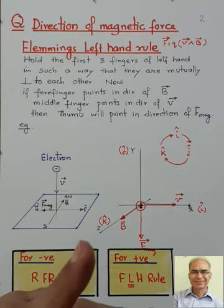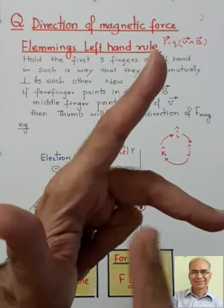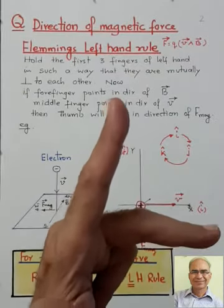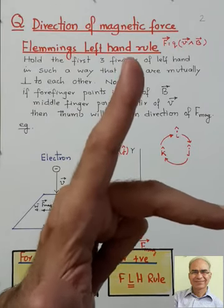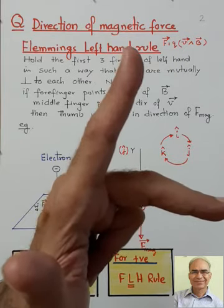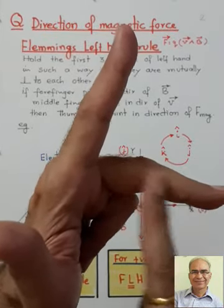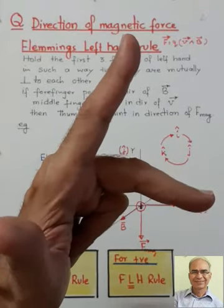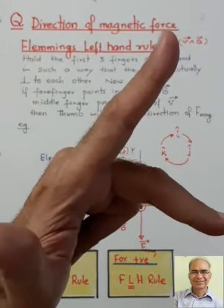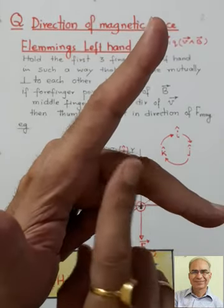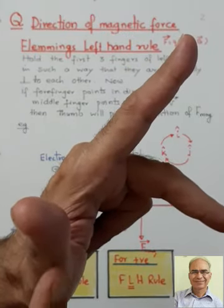What does this rule say? We use our left hand and hold the first three fingers mutually perpendicular to each other. If four fingers represent the direction of the magnetic field, and the central finger represents the direction of motion of the positive charge, then the thumb will give the direction of the magnetic force.